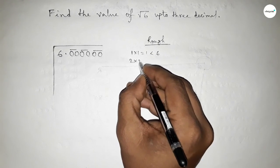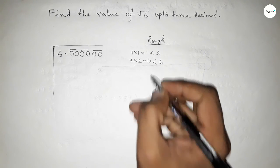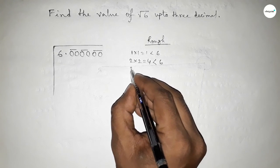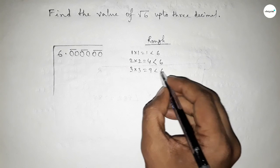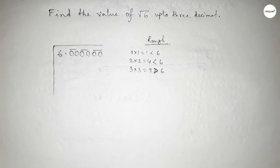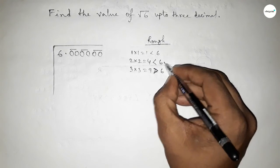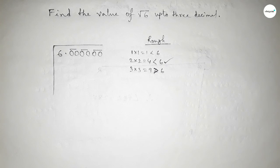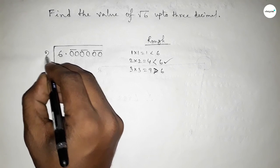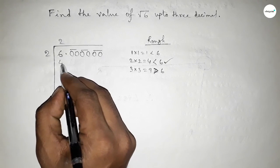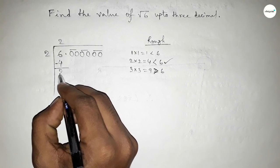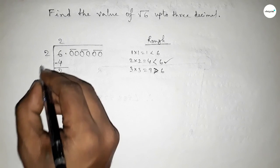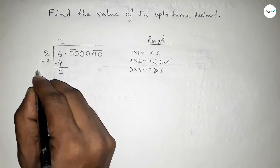If we put here 1, which is less than 6. If we put here 2, which is less than 6. If we put here 3, so 3×3=9 which is greater than 6. So we should put here 2. So we take first 2, so 2×2=4. Now subtracting this, so this is 2.